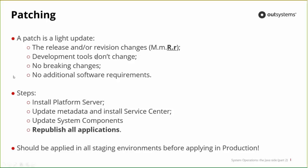The steps for patching are: install the platform server, update the metadata, install Service Center — basically run the configuration tool — then update system components, and republish all your applications. Although there are no breaking changes, you should always apply this in staging environments first — development, then quality, keep testing to make sure everything is prepared. Although we say there are no breaking changes, sometimes things happen unfortunately, so prepare for everything. You basically do a sprint with a patch or with an upgrade.